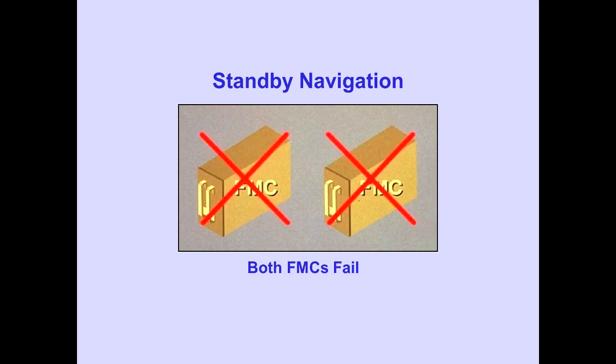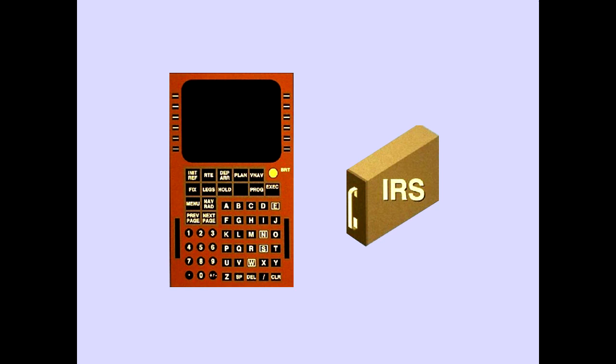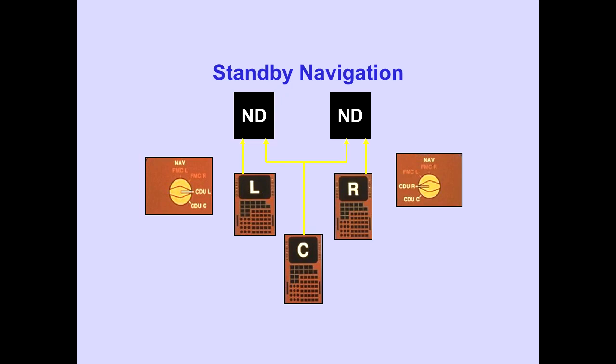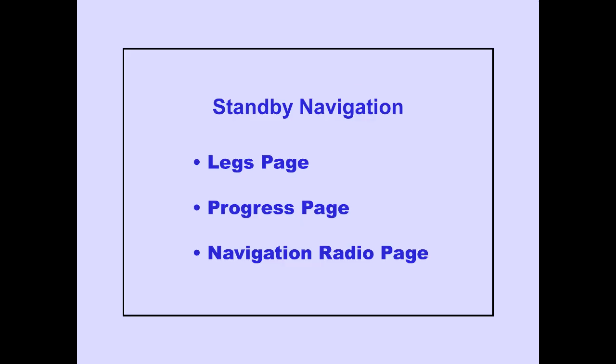Standby Navigation is used if both FMCs fail. Each FMS-CDU with its respective IRS is capable of providing navigation information. The Navigation Source Select switch is used to select the FMS-CDU for Standby Navigation. The only three pages available for Standby Navigation are the Legs page, Progress page, and Navigation Radio page.